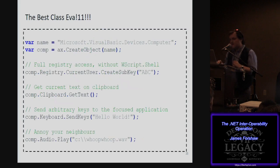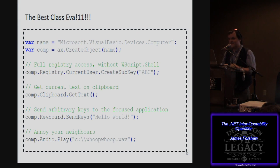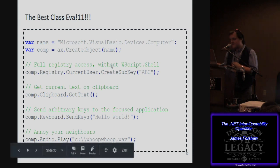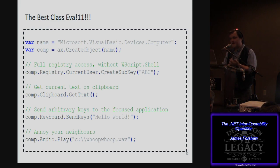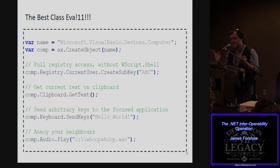One of the most interesting COM objects I found is almost literally a class that allows you to access your computer — it's part of the Visual Basic libraries. You can get full registry access: create keys, delete keys, set values — all without loading wscript.shell. You can manipulate the clipboard, read and set clipboard contents, send arbitrary keys to the focused application, and even play audio through an audio player.